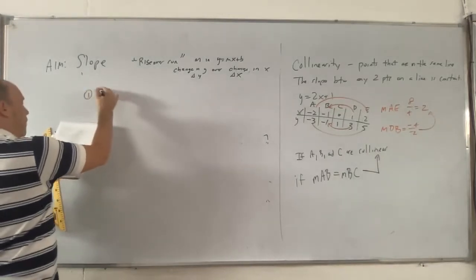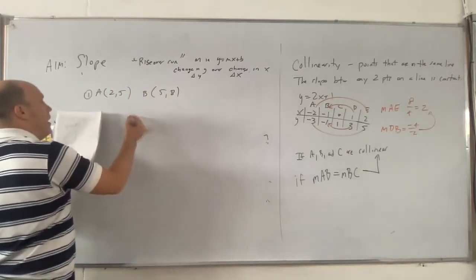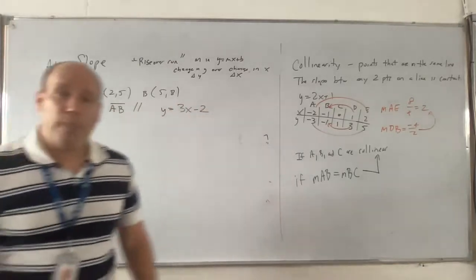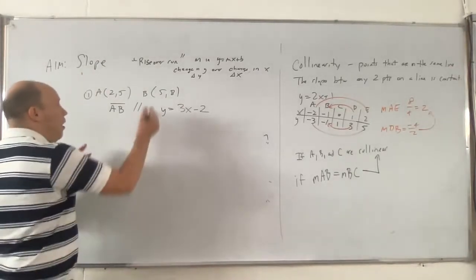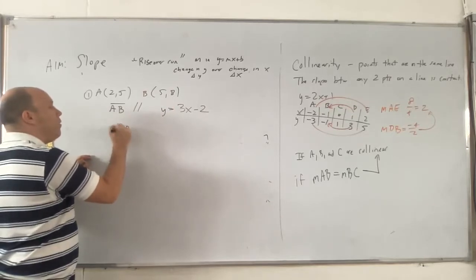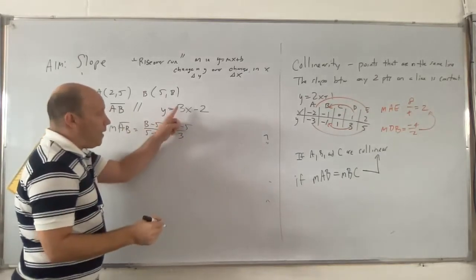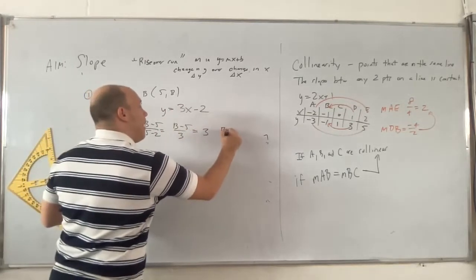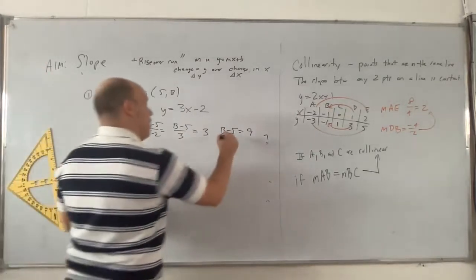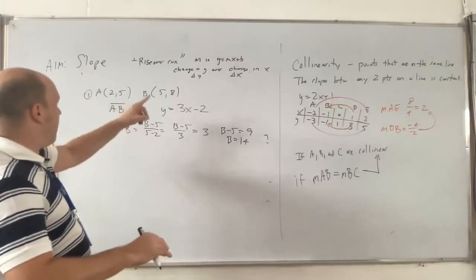Example one: point A is (2, 5) and point B is (5, B), and segment AB is parallel to y equals 3x minus 2. Find B. Since parallel lines have equal slopes, the slope of AB equals 3. So B minus 5 over 5 minus 2 equals 3, giving B minus 5 over 3 equals 3, so B minus 5 equals 9, and B equals 14.